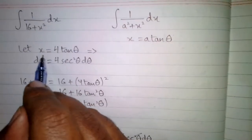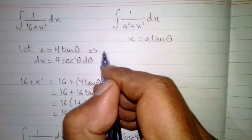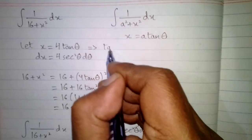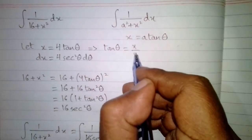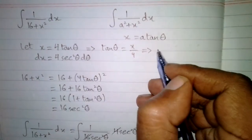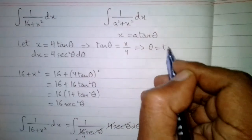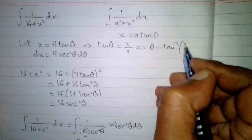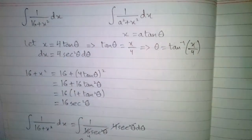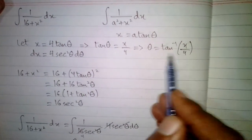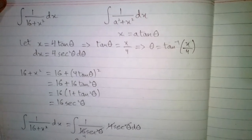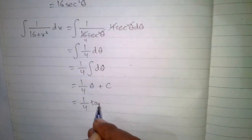From the substitution, we can find the value of tan theta, which is x upon 4. Therefore theta is the tan inverse of x upon 4. We now put this value of theta back into the result, giving us 1 upon 4 times tan inverse of x upon 4, plus C.